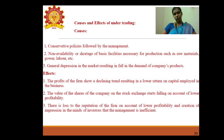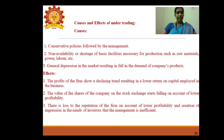Causes and effects of under-trading. Causes: conservative policies followed by management; non-availability or shortage of basic production facilities such as raw materials, power, and labor; general depression in the market resulting in fall in demand for the company's products. Effects: the firm's profits show a declining trend resulting in lower return on capital employed; the value of the company's shares on the stock exchange starts falling; and there is a loss to the reputation of the firm, creating the impression that management is inefficient.